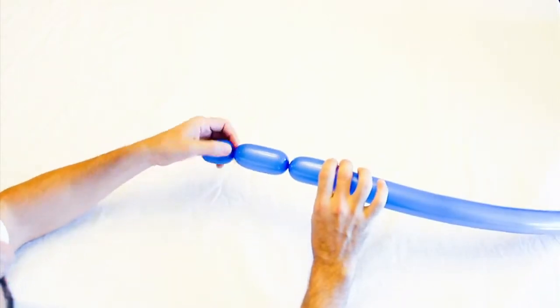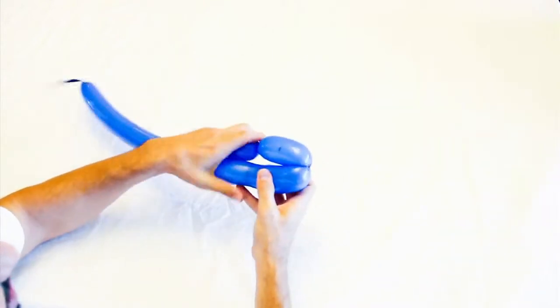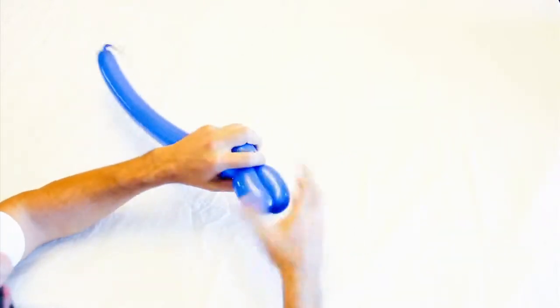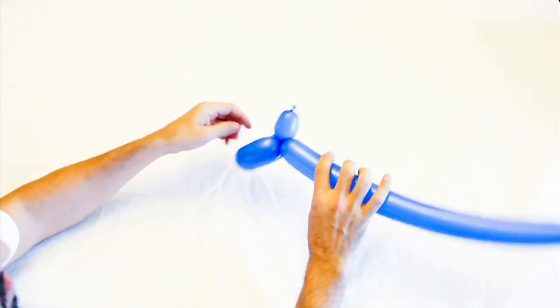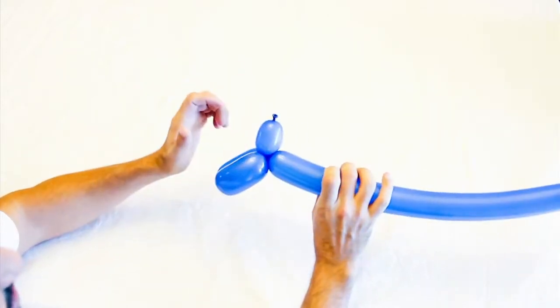You use this to make legs and stuff like that. If you want to lock this bubble into here, all you're going to do is twist them together. That's what you do for legs for a horse, dogs, cats, all kinds of stuff. So that's a simple lock twist.